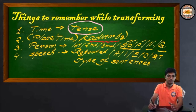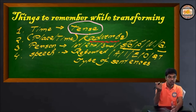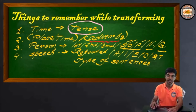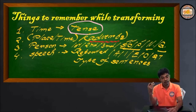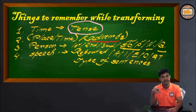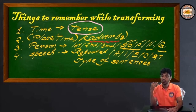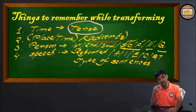So finally we get four focal points. Just remember them like north, south, east, west — four directions. The first is time, that's tense. The second is place and time, that means the adverbs. The third is person, that's the change of pronouns. And the fourth is speech, that's the types of sentences that the reported speech is in.